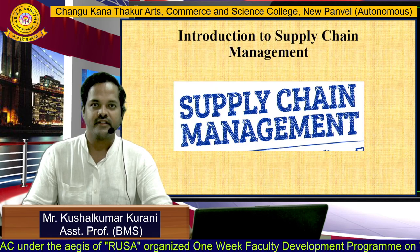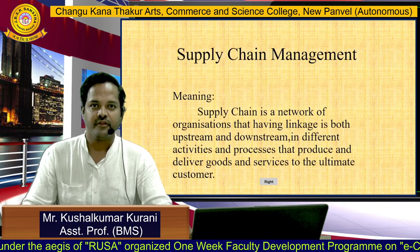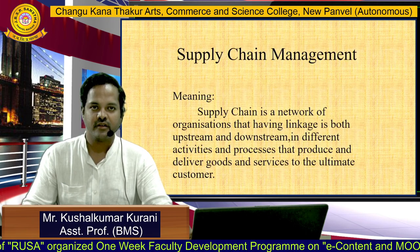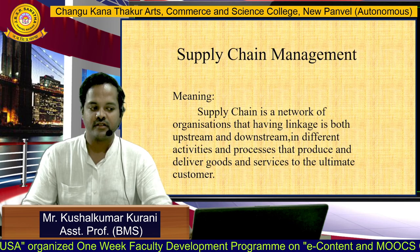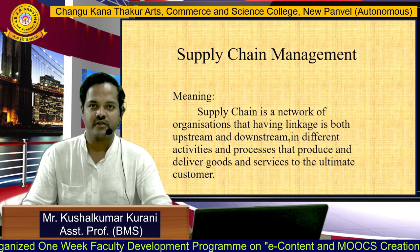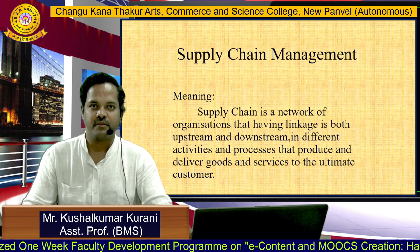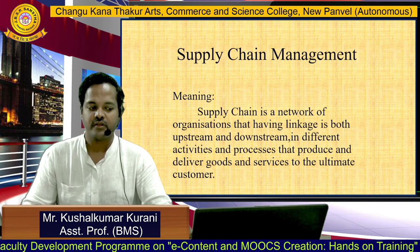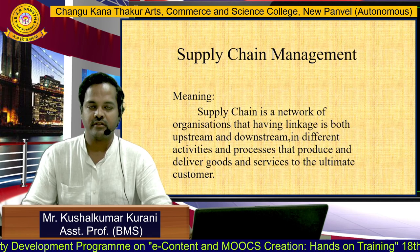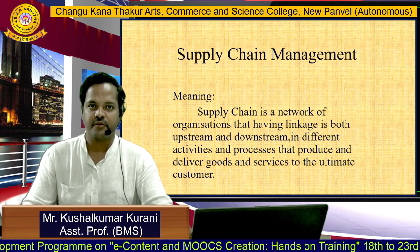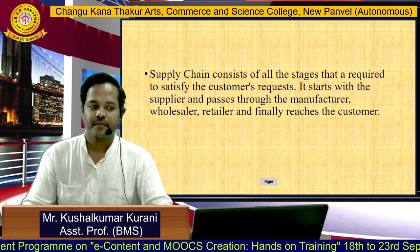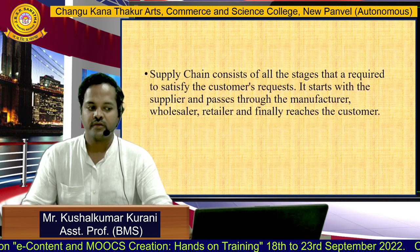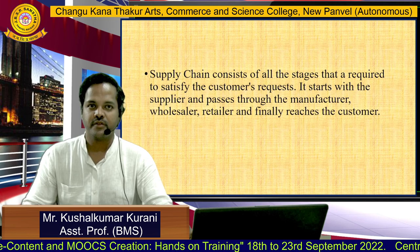First we will see the meaning of supply chain management. Supply chain is a network of organizations having linkages both upstream and downstream, with different activities and processes that produce and deliver goods and services to the ultimate customer. Supply chain consists of all the stages required to satisfy the customer's requests.